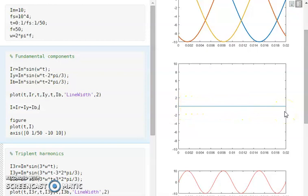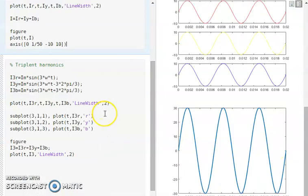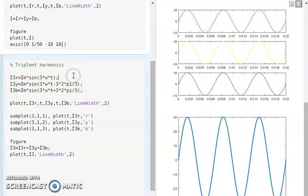Now let us see what will happen when there is a triplet harmonics due to the non-linearity of the power system distribution side. Here I've taken the triplet harmonics in the R, Y, and B phases. Basically the triplet harmonics frequency is three times more than the fundamental components.